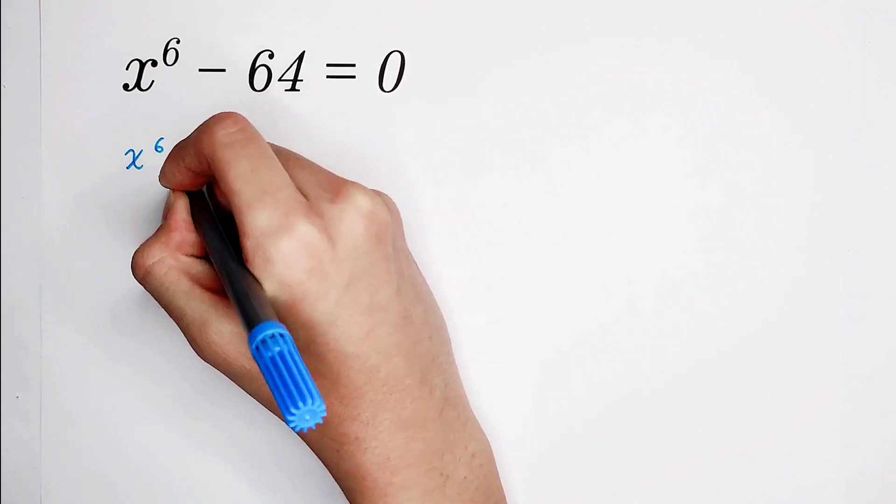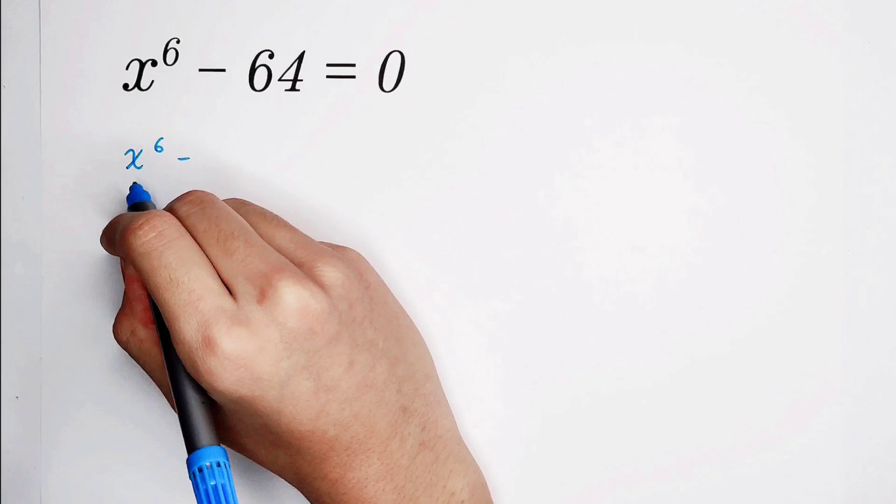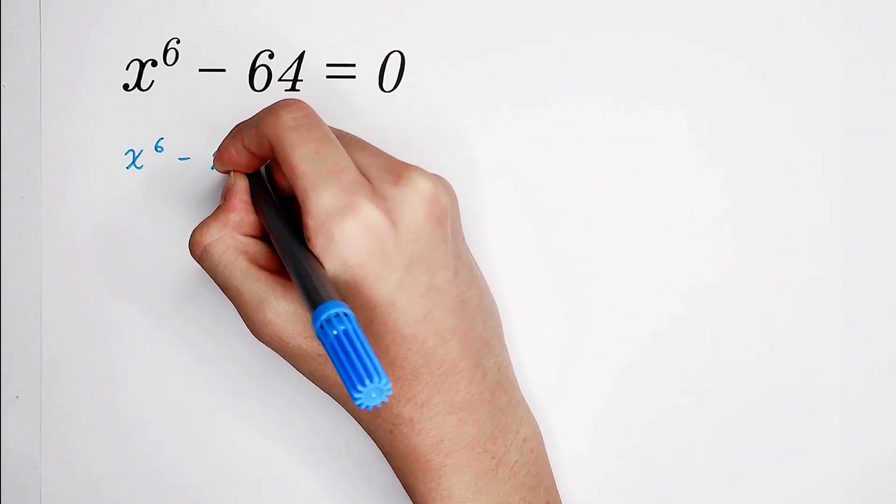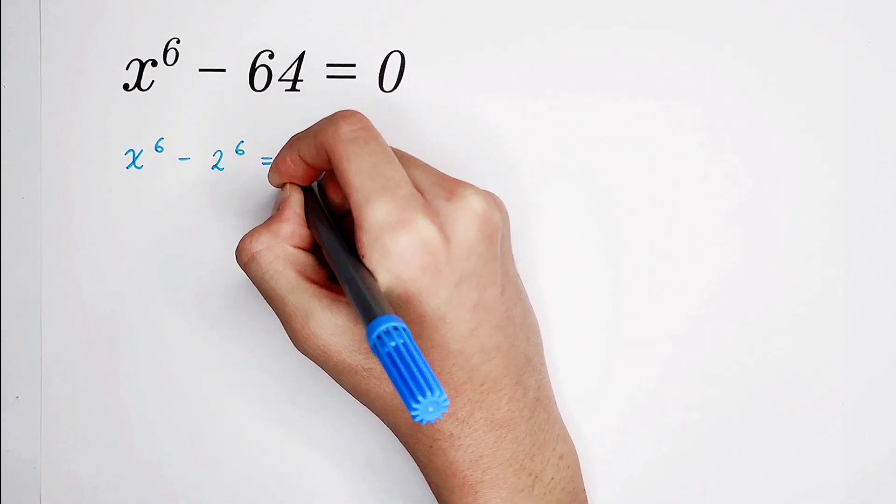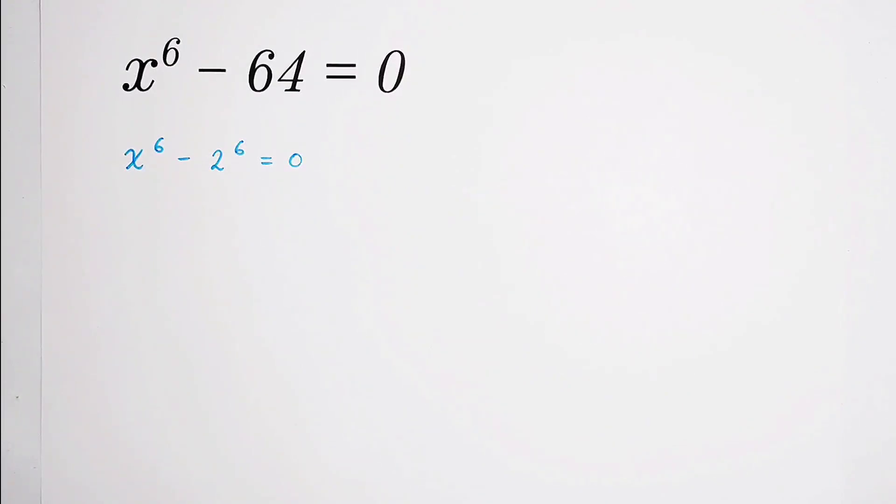So our original equation becomes x to the power of 6 minus 2 to the power of 6 equals 0. So now, maybe we are going to say, because x to the power of 6 minus 2 to the power of 6 equals 0, so x equals 2.